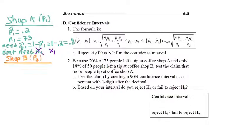Coffee shop B, our p2, started off with 18%, so p-hat 2 is 0.18. N2 is the 50 people, and q-hat 2 is the complement, 0.82.